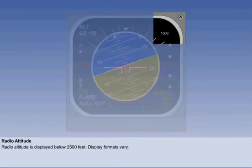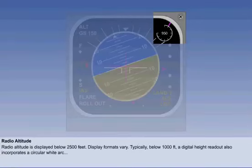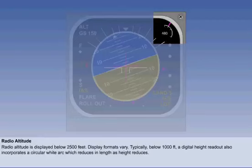Radio altitude is displayed on the screen below 2,500 feet. As mentioned earlier, it may be presented in differing formats. A common format is illustrated here. Between 2,500 feet and 1,000 feet above ground level, the radio altitude is digitally displayed. Below 1,000 feet, the digital readout continues, but the display changes to incorporate a circular white arc, which is graduated in 100-foot increments. The length of the arc reduces in an anti-clockwise direction, as height above ground level reduces.